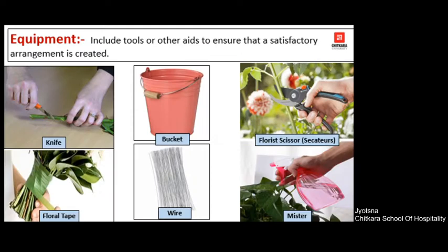The next ingredient is Equipment — these are the other tools or equipment which help to ensure that you are making a satisfactory arrangement. You have knife, bucket, floral scissor, mister, wire and floral tape. If you need to cut any flower stem, a knife can be used. Buckets are used before arranging — you can put all the flowers with water so that the plant material is hydrated and fresh. Floral scissor, also called as secateur, is a special scissor used to trim and cut flower stems. Floral tape helps to combine a bunch of flowers or plant material together. Wire is required to give support to your stems. Mister is a spray bottle used to spray fresh water on the flower arrangements.